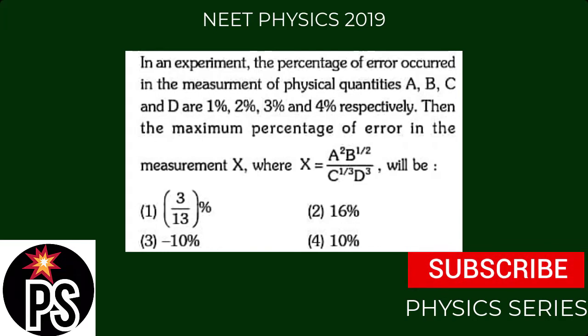This question is from 11th Physics, unit of measurement. In this question, we have an experiment where the percentage of error occurred in the measurement of physical quantities A, B, C, and D are 1%, 2%, 3%, and 4% respectively.